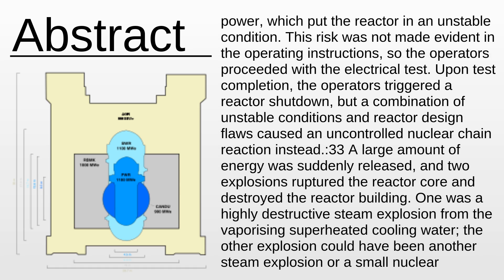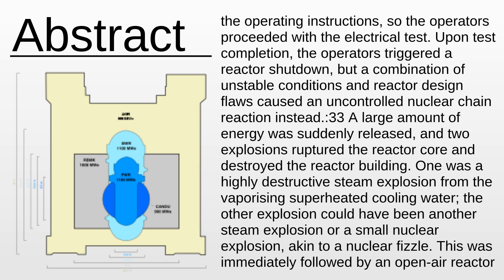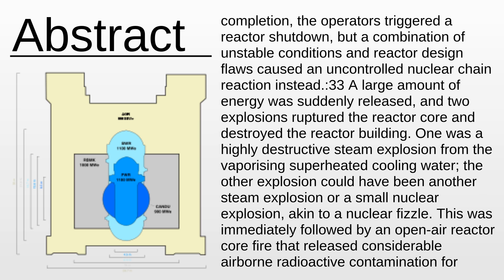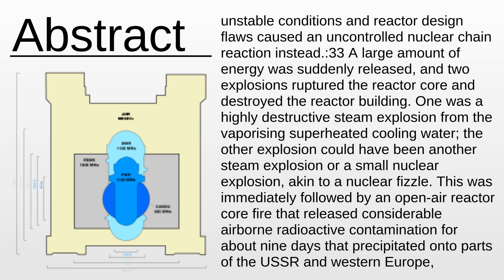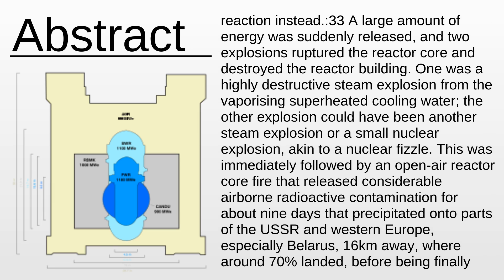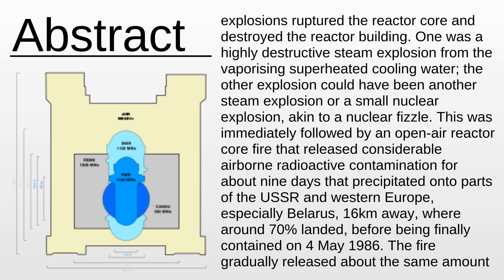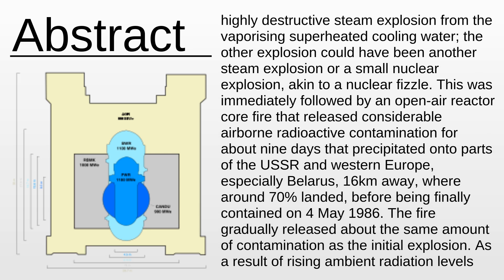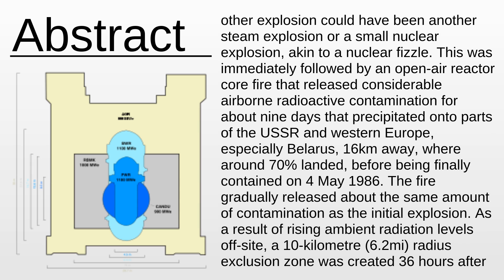This risk was not made evident in the operating instructions, so the operators proceeded with the electrical test. Upon test completion, the operators triggered a reactor shutdown, but a combination of unstable conditions and reactor design flaws caused an uncontrolled nuclear chain reaction instead. A large amount of energy was suddenly released, and two explosions ruptured the reactor core and destroyed the reactor building. One was a highly destructive steam explosion from the vaporizing superheated cooling water; the other explosion could have been another steam explosion or a small nuclear explosion, akin to a nuclear fizzle.